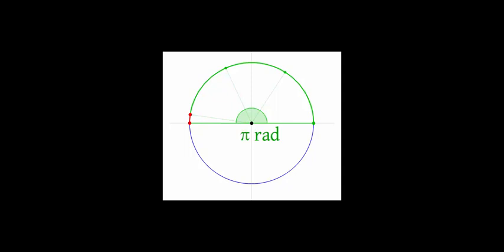There's pi radians which is a half revolution around a circle. Now if we go further all the way around the circle we end up with 2 pi radians. And this should make sense if you think about...